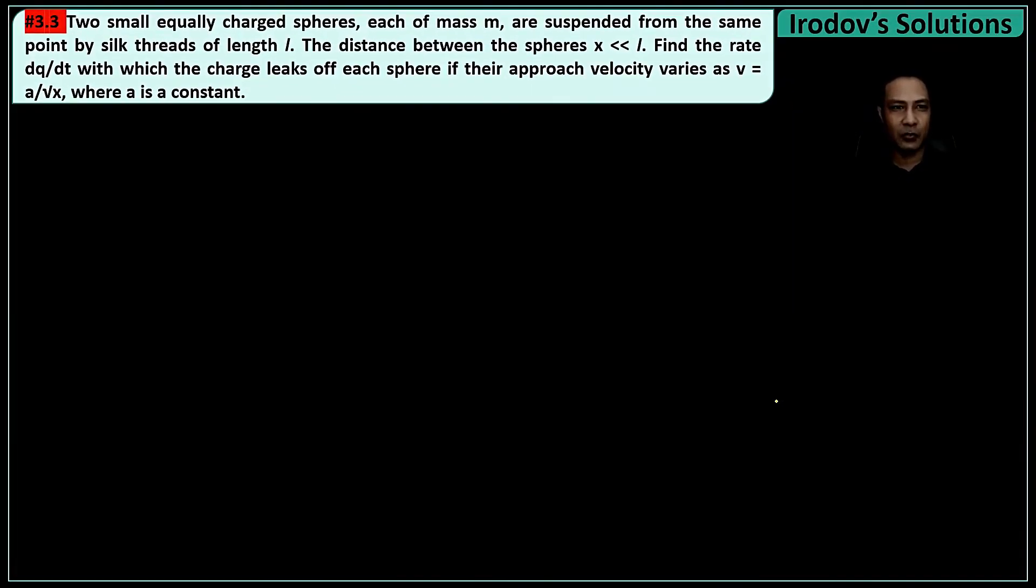Hello dear listeners. Let's see this question of Irodov, question number 3.3. The question states two small equally charged spheres each of mass m are suspended from the same point by silk threads of length l. The distance between the spheres x is much much smaller than the length of the thread l. Find the rate dq/dt by which the charge leaks off each sphere if their approach velocity varies as v = a/√x where a is a constant.